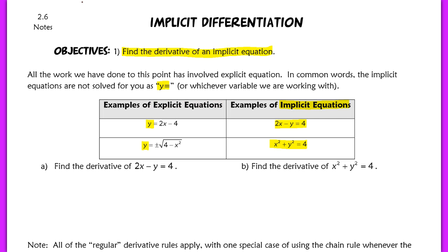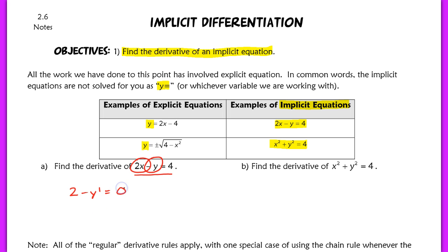Our goal today is to find derivatives of implicit equations. We're going to start with a basic example: 2x minus y equals 4. If we want to differentiate this with respect to x, we differentiate 2x like we normally would — the derivative of 2x is 2. The derivative of y is y prime, and the derivative of 4 with respect to x is just 0. To isolate y prime, we subtract 2 and divide out the negative 1 to get y prime equals 2.